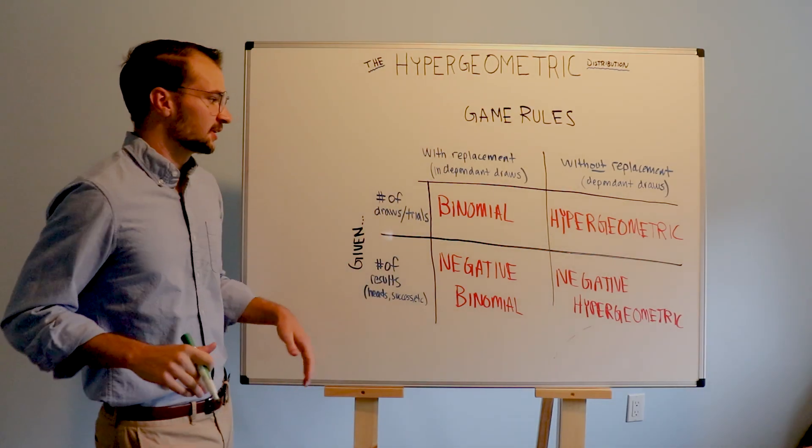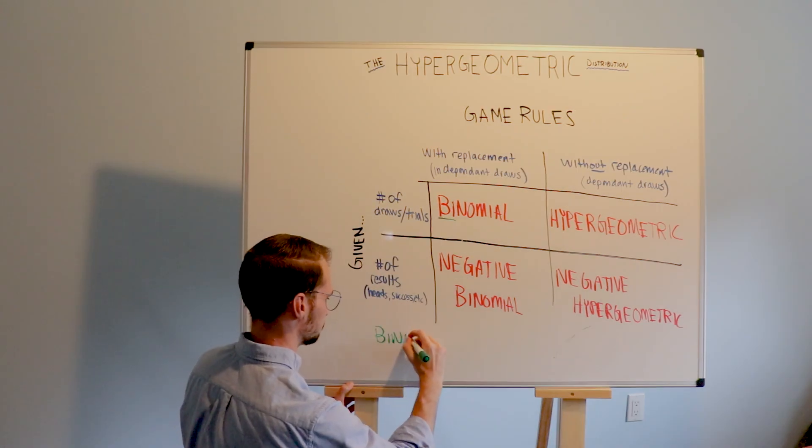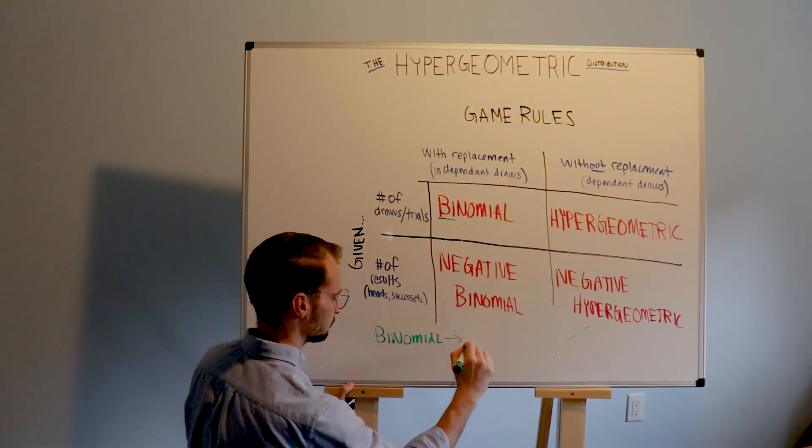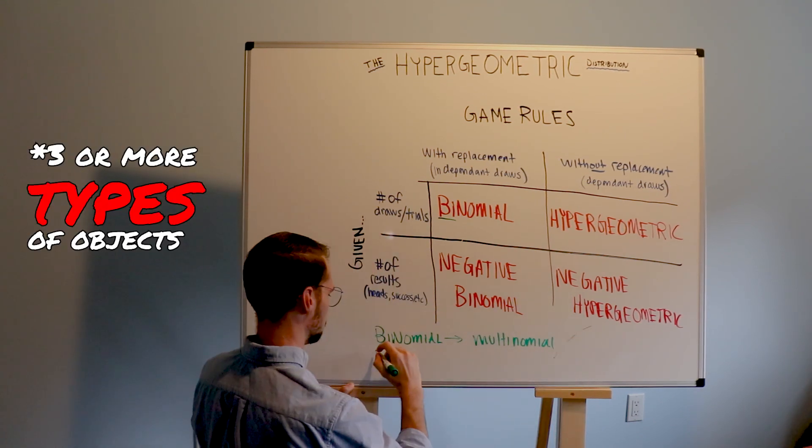Another similarity is that the binomial, where bi means two, can actually be a multinomial when there's three or more objects in the urn.